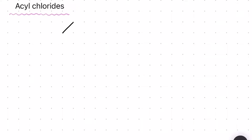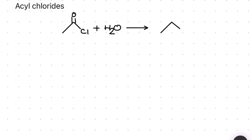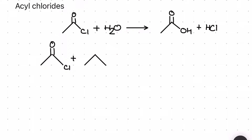Next up are the acyl chlorides — my favorite functional group. There are four different reactions of the acyl chlorides that you need to know, so please don't underestimate them when you revise. For the first reaction, the acyl chloride reacts with water to produce a carboxylic acid and some HCl in a very violent reaction.